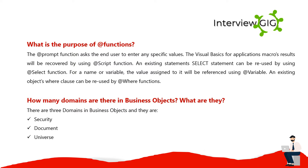What is the purpose of AT functions? The @Prompt function asks the end user to enter specific values. The Visual Basic for Applications macro results will be recovered using the @Script function. Existing SELECT statements can be reused using the @Select function. For a named variable, the value assigned to it will be referenced using that variable in existing objects. The @Where function allows WHERE clauses to be reused. How many domains are there in Business Objects? There are three domains: Security, Document, and Universe.